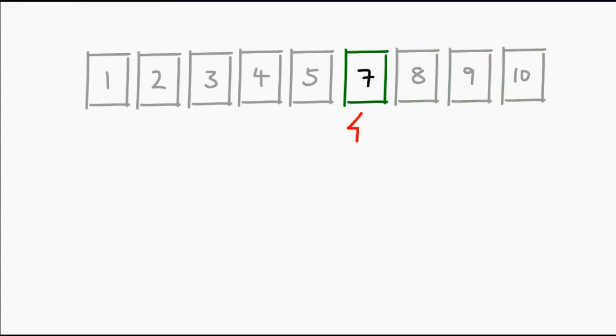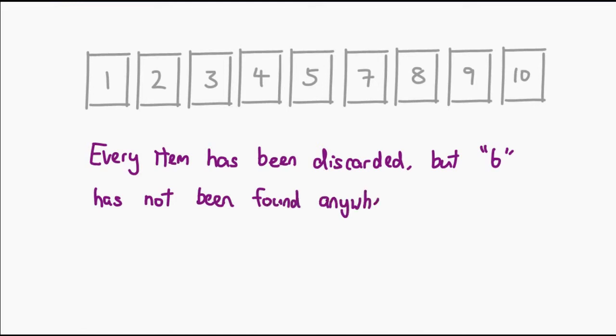So we're left with 7, we look at it, and we say, hey, that's too large too, and we discard it. You realize that there are actually no items left in the list that you haven't discarded. And what that clearly tells you is that the item you're looking for isn't in the list.